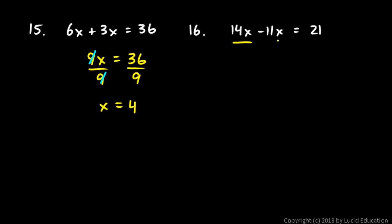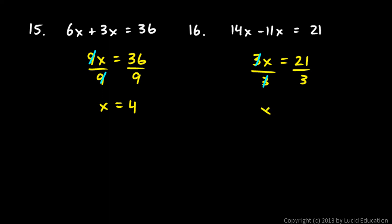Similar approach here: 14x minus 11x are like terms. So 14x minus 11x is positive 3x, giving us 3x equals 21. I can divide both sides by 3. On the left, the 3s cancel out, and I'm left with x equals 21 divided by 3, which is 7.